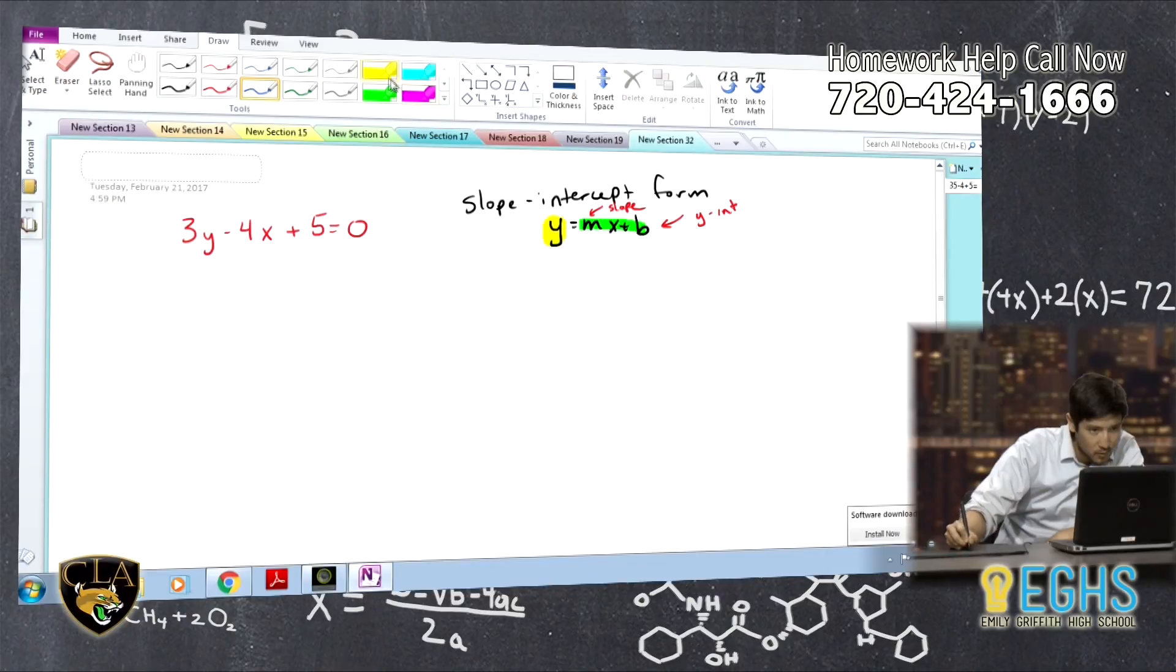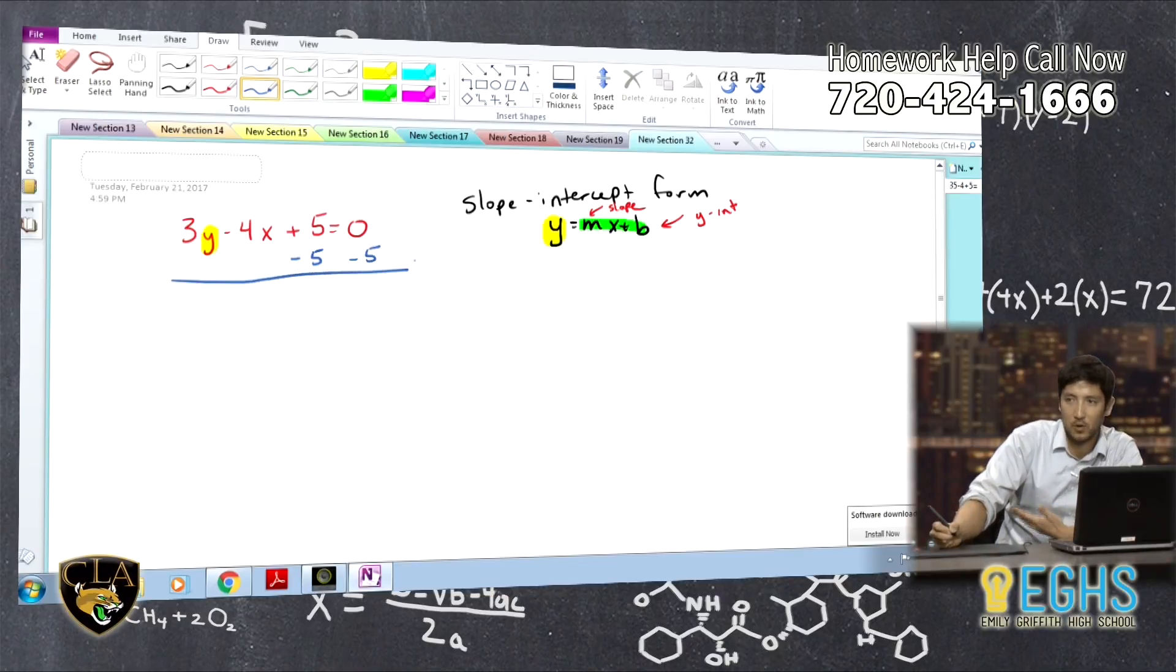So, here's how we do that. All we do is think, we want to keep this y by itself. So, let's move everything else out of the way. So, I'm going to get rid of this on this side, and I'm going to move it over here, the same way we always solve equations here.